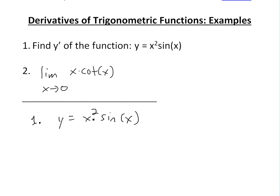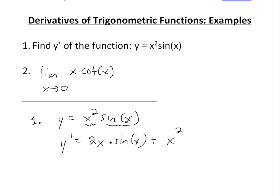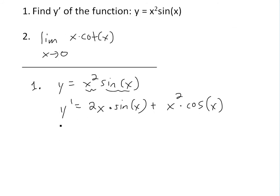Now we can just solve this using the product rule — make sure you watch that in the video link below. The product rule states you find the derivative of the first function. These are two functions: x squared is the first, sine of x is the second. The derivative of x squared is 2x using the power rule, times sine of x, plus x squared times the derivative of sine of x, which equals cosine of x. So our answer is 2x·sin(x) + x²·cos(x).